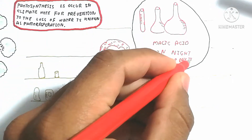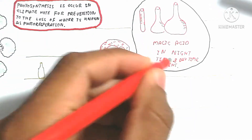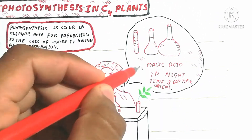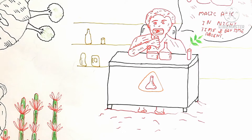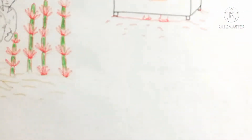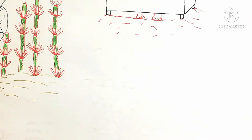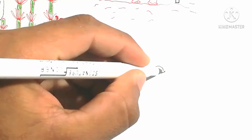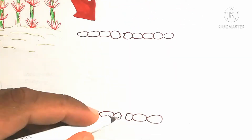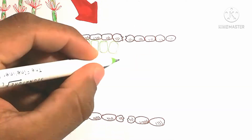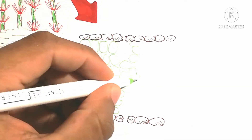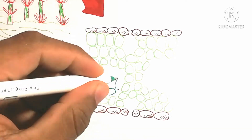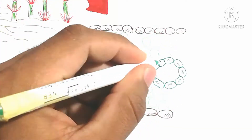Malic acid is stored in the mesophyll cell as a four-carbon containing compound for further use during daytime, for prevention of photorespiration. Carbon dioxide absorption from the atmosphere is inhibited, and that carbon dioxide is carried from the malic acid into the bundle sheath cell.